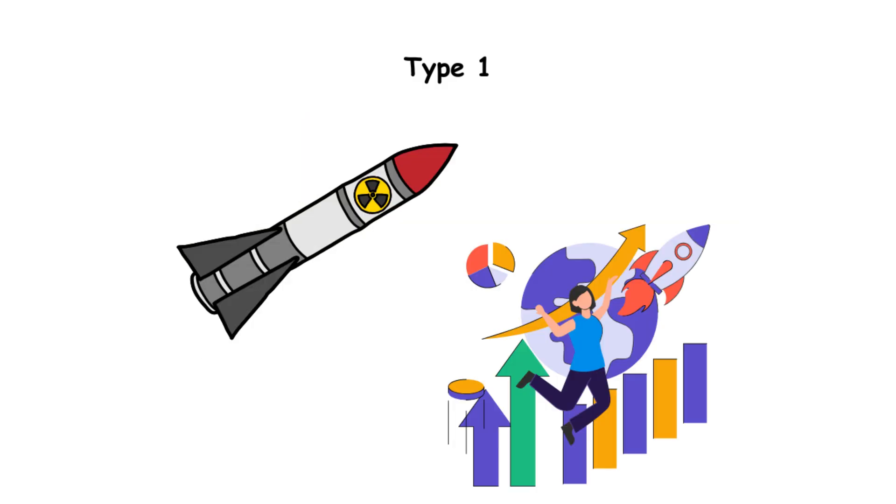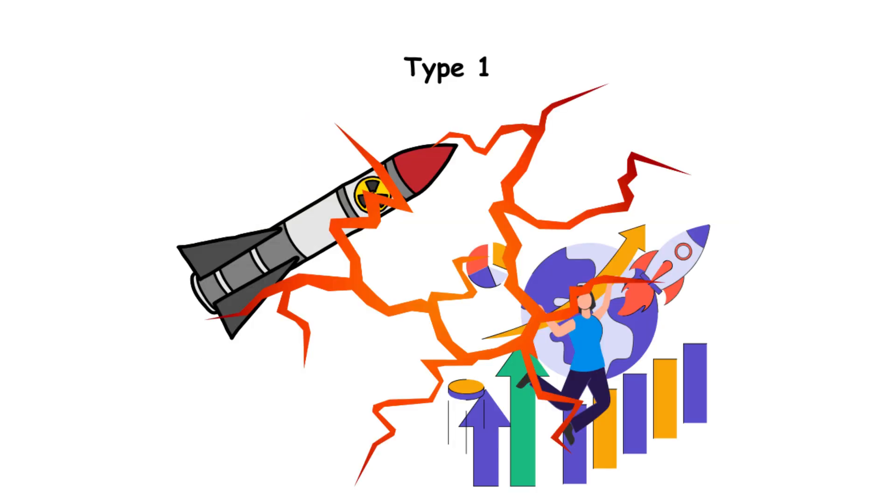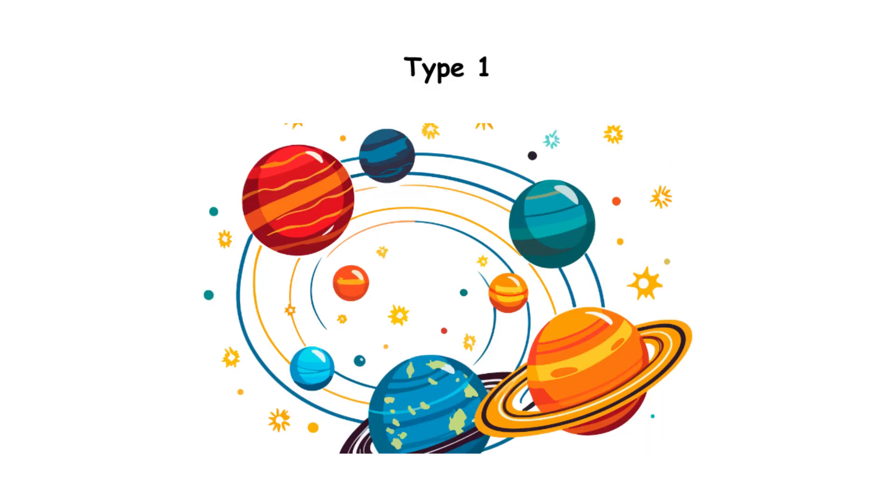Advanced weapons or unchecked growth could still lead to collapse. If we succeed, the next step is the stars. A Type 2 civilization harnesses the energy of its star.